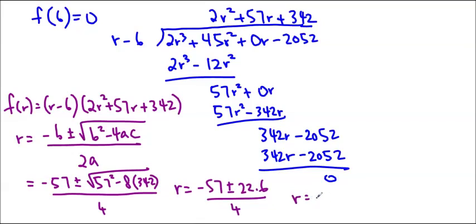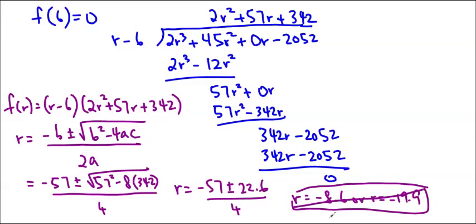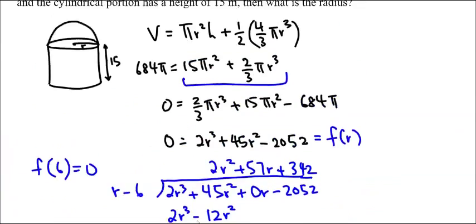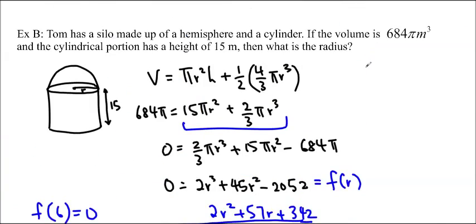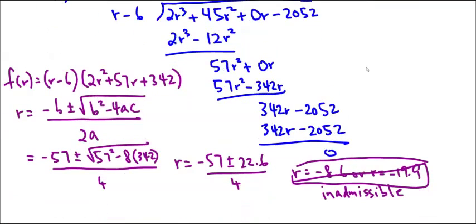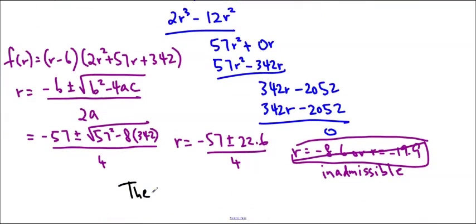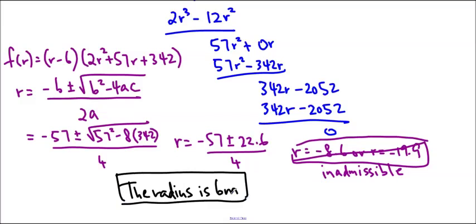And when you type this into your calculator, you're going to get r equals negative 8.6 or r is equal to negative 19.9. Of course, the radius can't be negative, so these are both inadmissible. You do have to find them before you can say they're inadmissible, so don't just assume they're inadmissible. And so we have one solution. Just double check, what does our question ask us? It says, what is the radius, and it is in meters, so we'll say the radius is 6 meters, the end. Put a little victory dance around it, and we're done.